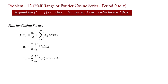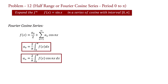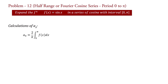We will calculate a₀ and aₙ and substitute their values into this equation. First, a₀: a₀ = (2/π) integral from 0 to π of f(x) dx. In our problem f(x) = sin(x), so a₀ = (2/π) integral from 0 to π of sin(x) dx.